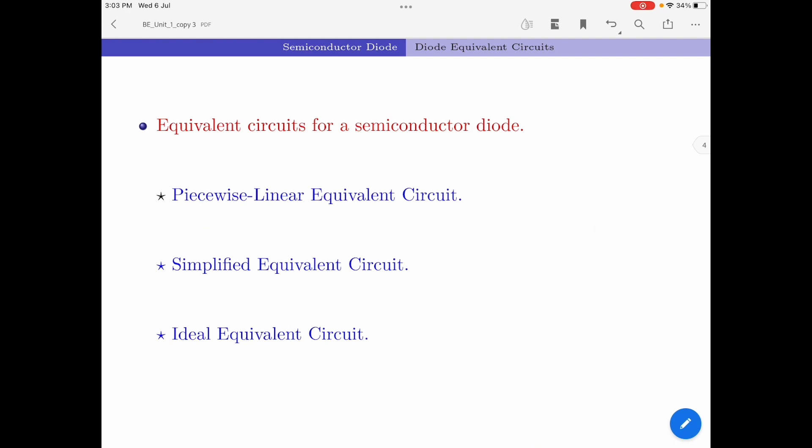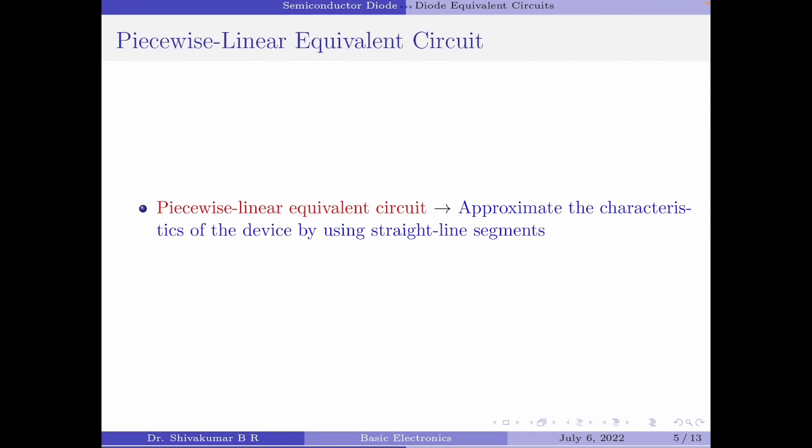Let us now look at the different equivalent circuits for a semiconductor diode. We can represent a semiconductor diode in its equivalent circuit form in three methods: the first is the piecewise linear equivalent circuit, the second is the simplified equivalent circuit, and the last is the ideal equivalent circuit. One of the best techniques for obtaining an equivalent circuit is to approximate the characteristics of the device using straight line segments, and the circuit so obtained is called a piecewise linear equivalent circuit.